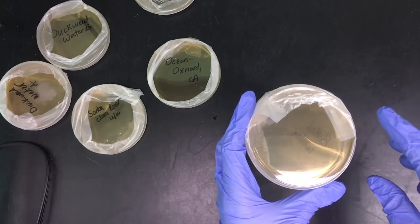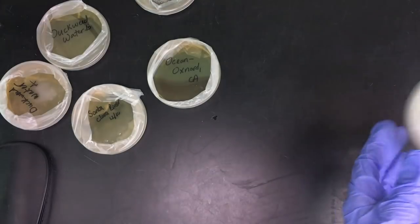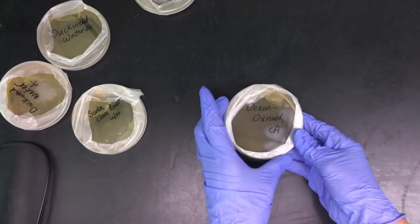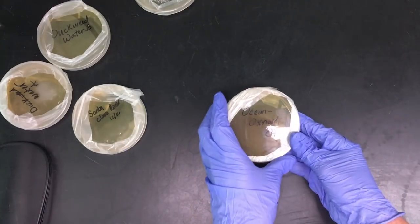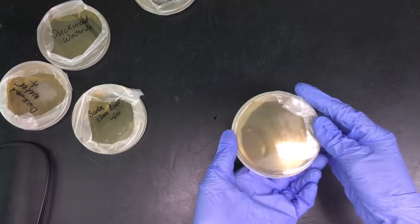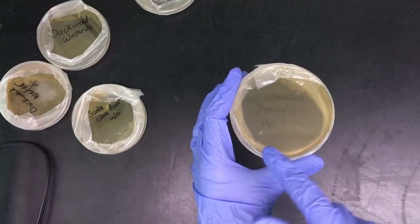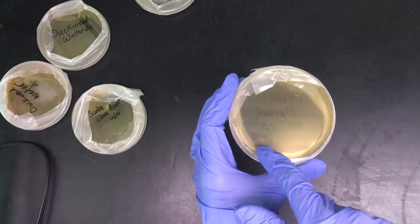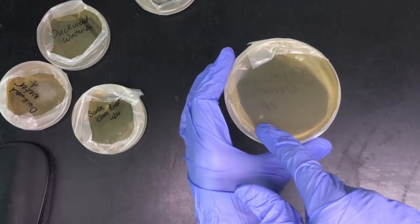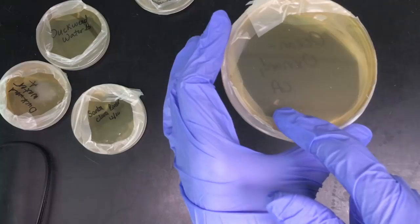This was the ocean water in Oxnard and it looks like we have a colony here. So it looks like we have one colony of coliform bacteria and it's a light pink color.